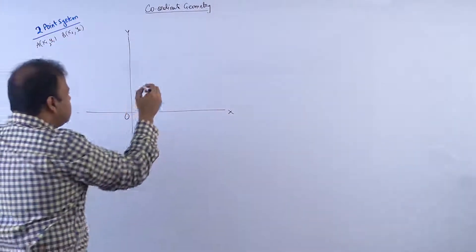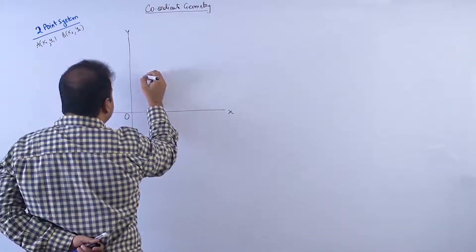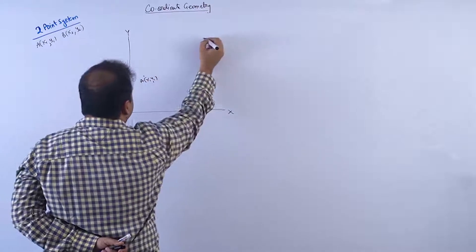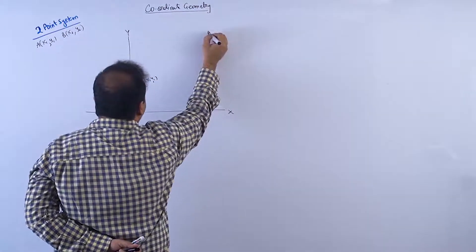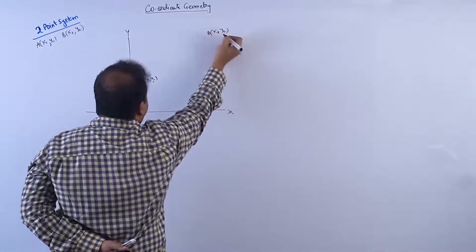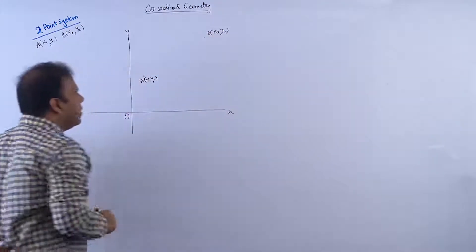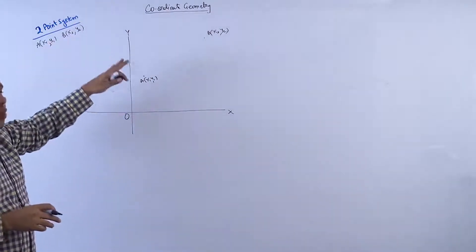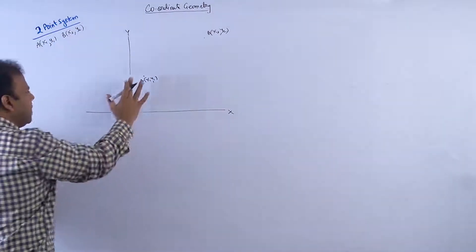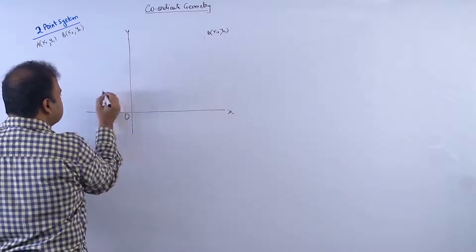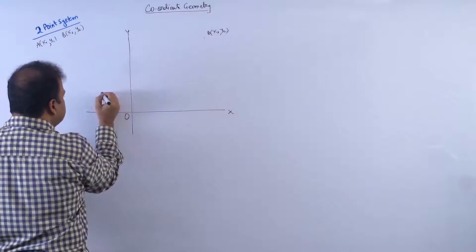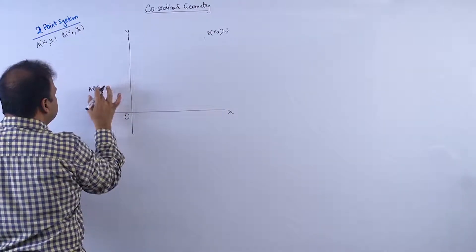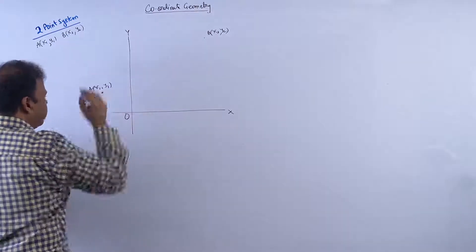So suppose this is point A, that is (x1, y1), and this is point B, that is (x2, y2). We can also take points in the second quadrant, third quadrant, fourth quadrant — whatever you want.